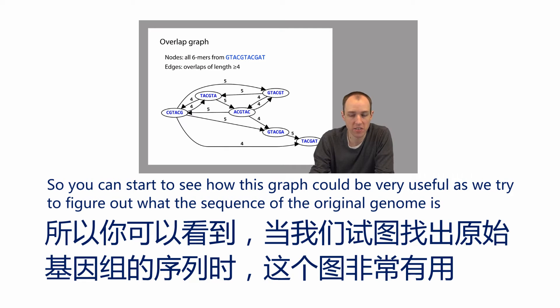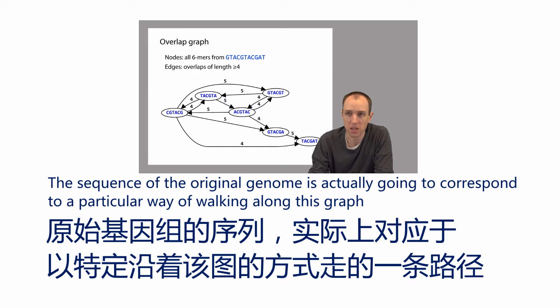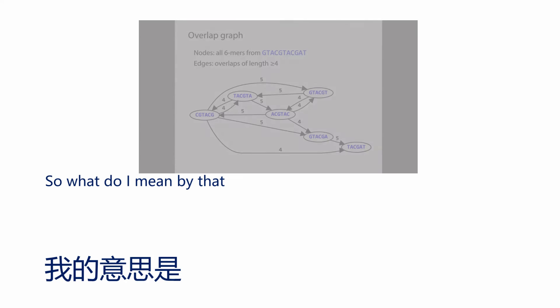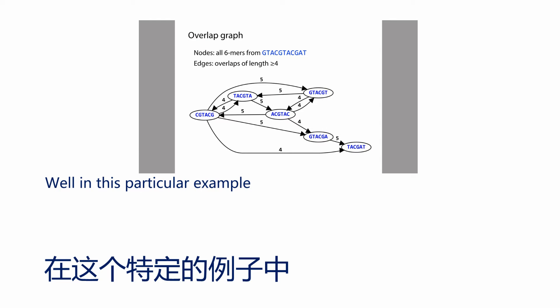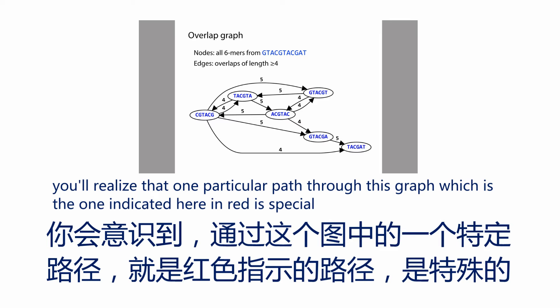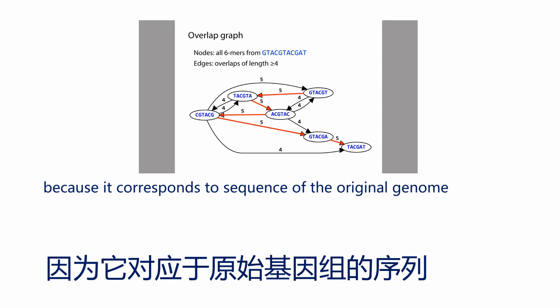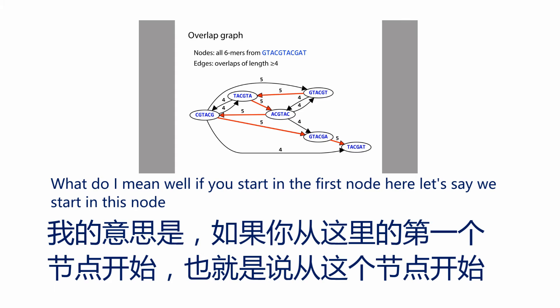You can start to see how this graph could be very useful as we try to figure out the sequence of the original genome. The sequence of the original genome is actually going to correspond to a particular way of walking along this graph. In this particular example, if you look at the graph long enough, you'll realize that one particular path through the graph — indicated here in red — is special because it corresponds to the sequence of the original genome.